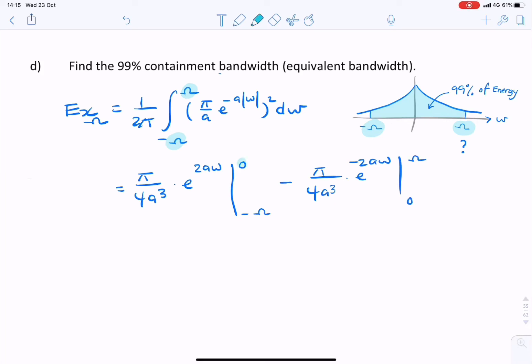So now we simply substitute the limits and simplify. So that will give me π over 4a cubed into 1 minus e to the minus 2aω minus another one of the same, minus 2aω minus minus plus 1. Now these ones add up, so that should give me π over 2a cubed into 1 minus e to the minus 2aω.